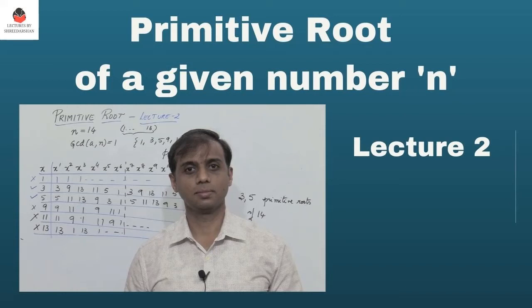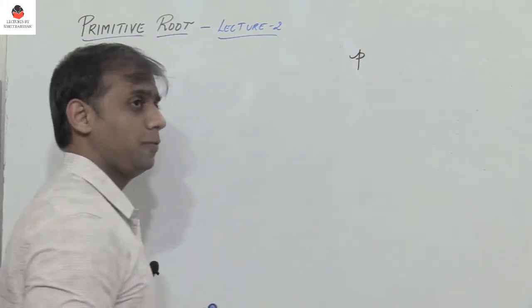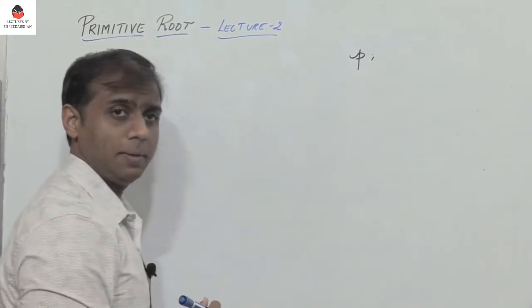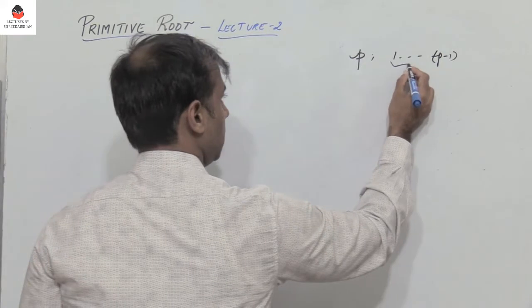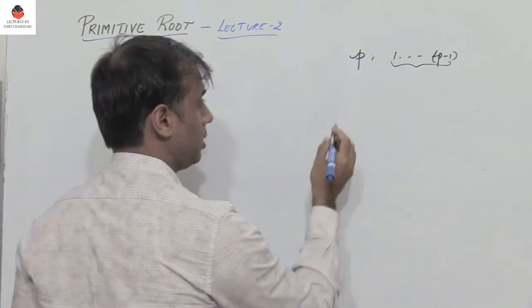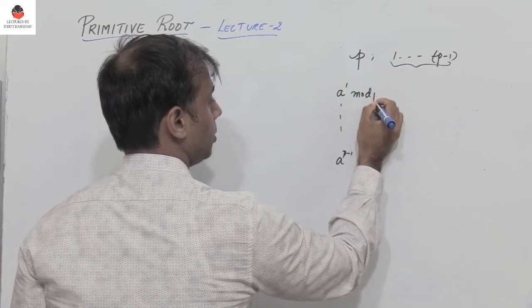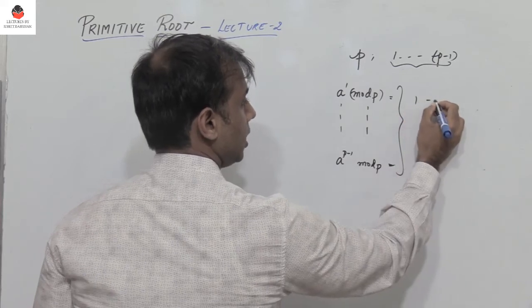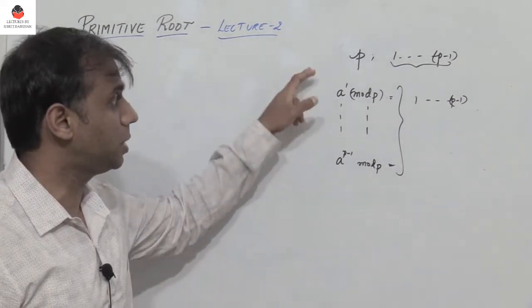Hello friends. In the previous video segment where I dealt with primitive roots, we considered a prime number p. So given a prime number p, how do I find if a given number is a primitive root of p? If p is a prime number, then first find all the numbers which are relatively prime to p — that's going to be 1 to p minus 1. Then consider a number a which lies between 1 to p minus 1, raise it to powers 1 to p minus 1, and calculate the value in mod p. If this generates all the numbers which are relatively prime to p, which is 1 to p minus 1, then that number a is considered to be a primitive root of p.